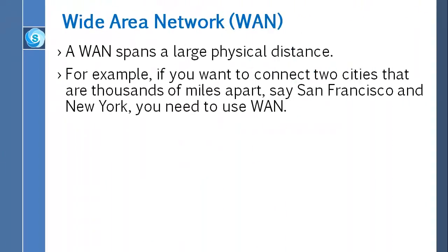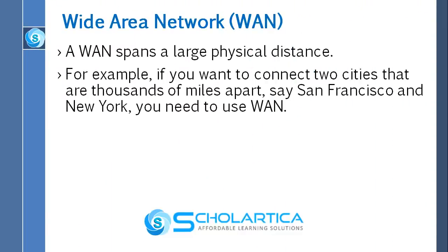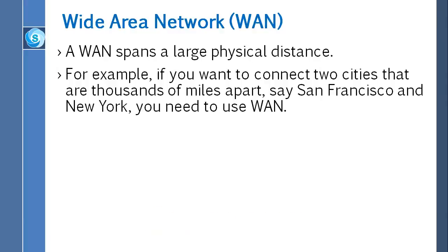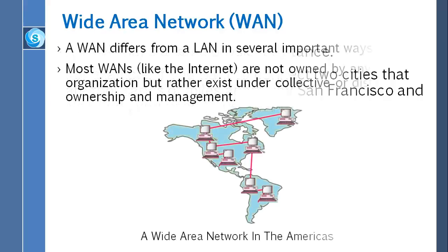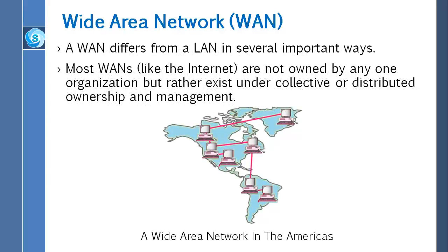As the term implies, a wide area network, or WAN, spans a large physical distance. For example, if you want to connect two cities that are thousands of miles apart — say San Francisco and New York — you need to use wide area networks. A wide area network differs from a LAN in several important ways. Most wide area networks, like the internet, are not owned by any one organization but rather exist under collective or distributed ownership and management.